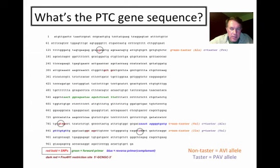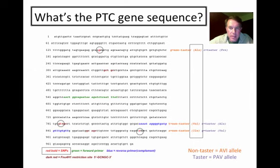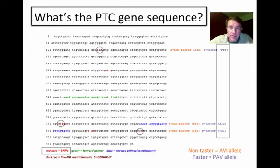There is a non-taster allele known as the AVI allele. At those three variable locations, the non-taster has G, T, and A, which lead to alanine, valine, and isoleucine in the protein — hence AVI allele. The taster has a different set: instead of G, it has C; instead of T, it has C; and instead of A, it has G — producing proline, alanine, and valine, hence the PAV allele. So those three differences are all that make up the differences between any individual, and we're going to try to pluck those out and take advantage of them.